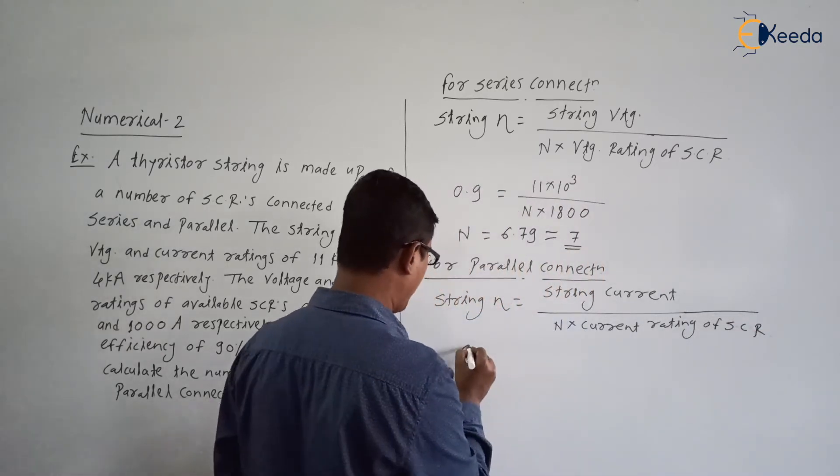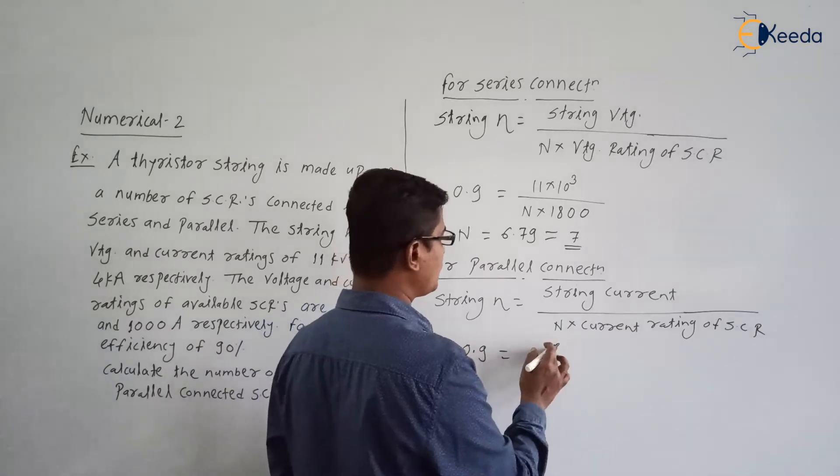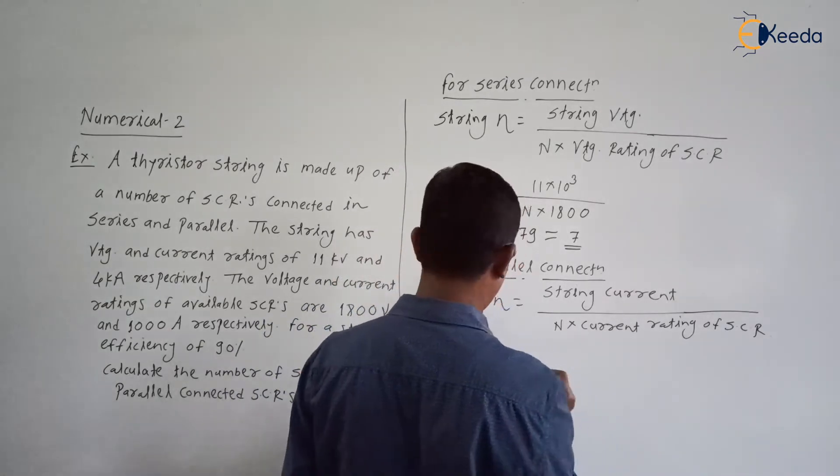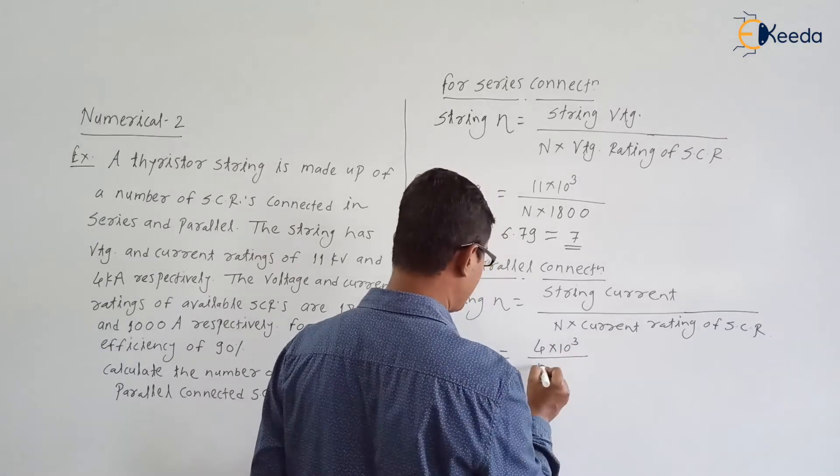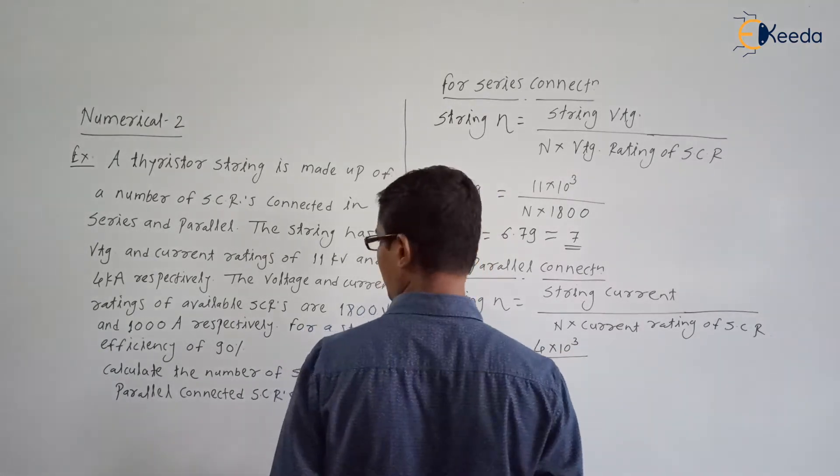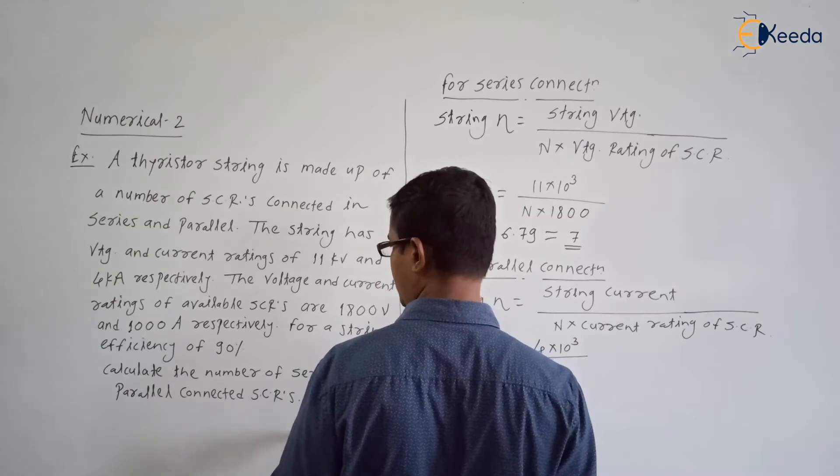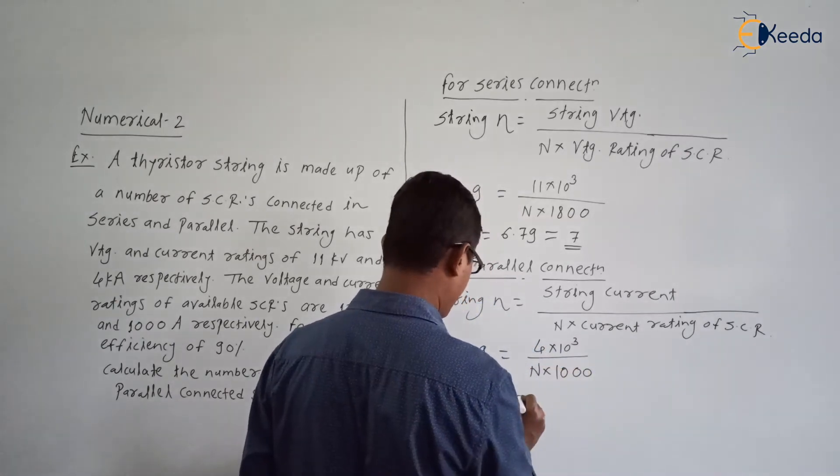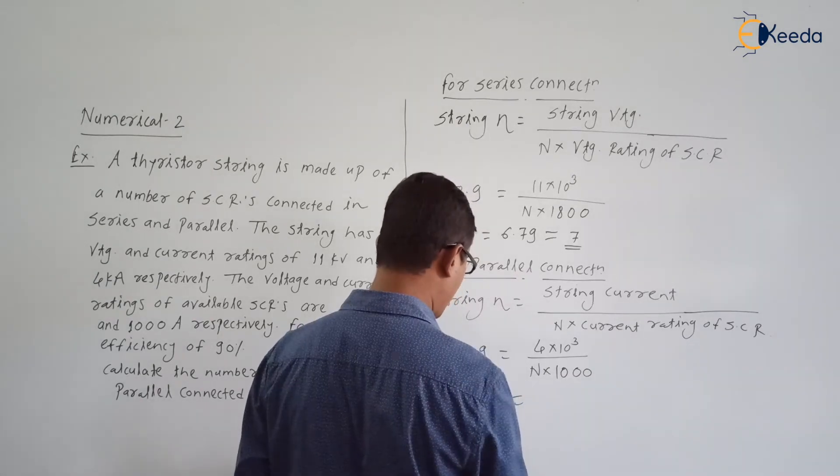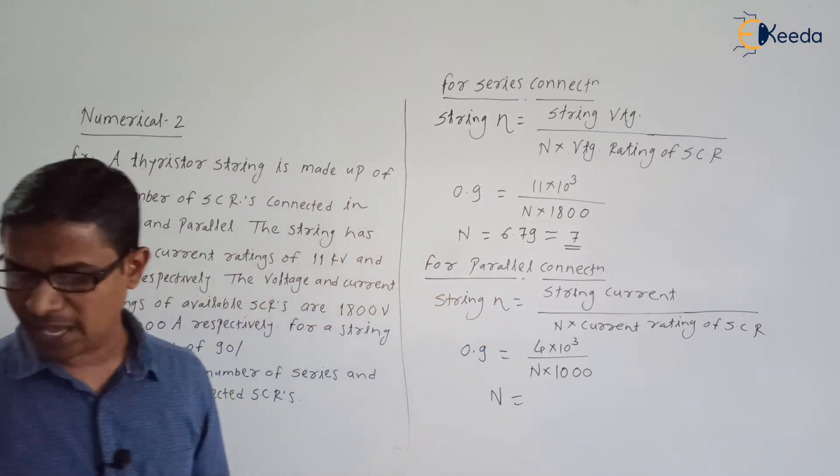So like this we can find. It is 0.9 equals string current 4K, 4 into 10 to the power 3, divided by number of SCRs n. Current rating of SCR is 1000. So from this can we find n? Yes.